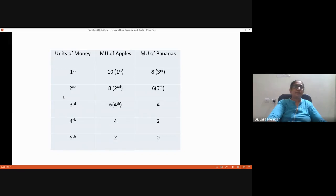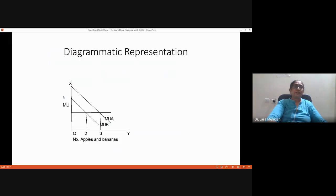Diagrammatic representation: marginal utility of apple is MU_A, marginal utility of banana is MU_B. He is buying three units of apple and two units of banana and spending all five rupees. Marginal utility is on the y-axis, number of apples and bananas on the x-axis.